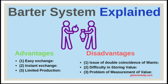Non-existence of a common measure of value: a barter system could not determine the value of commodities to be exchanged, as they lacked a commonly acceptable measure to evaluate each and every commodity.